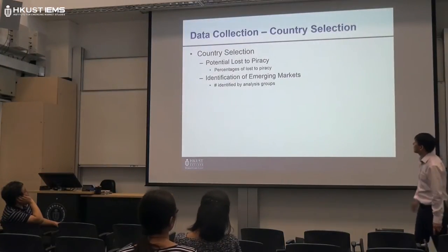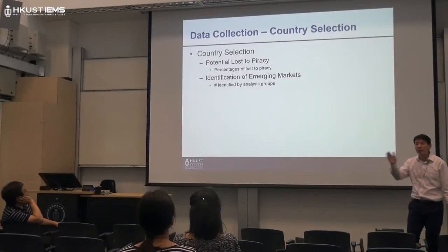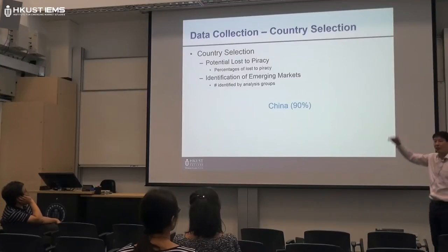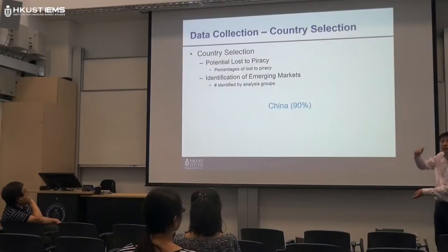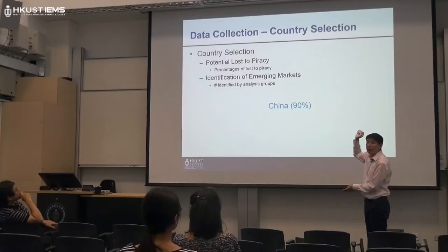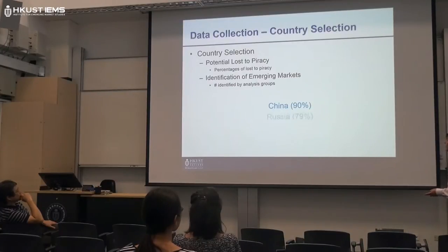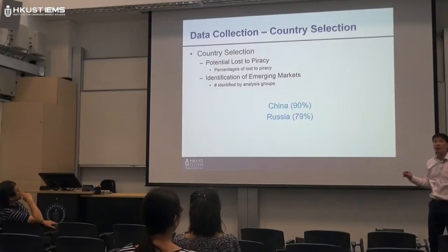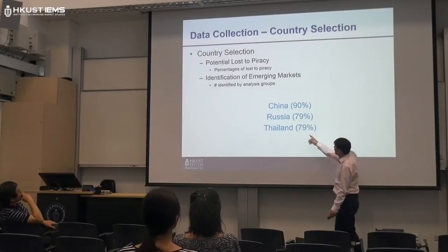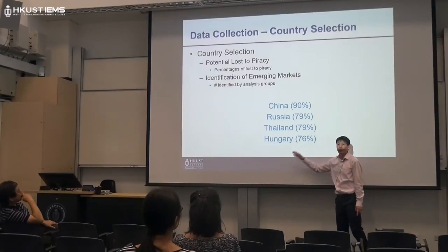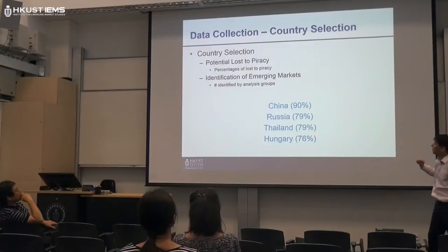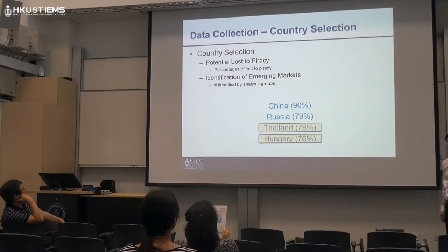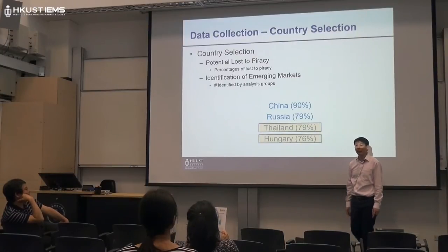For data collection, we first select which country to study. There are lots of emerging countries available. We look at the list — China at 90% piracy rate, Russia at 78%, Thailand at 79%, Hungary at 76%, and the list goes on. At the beginning I wanted to study four countries, but at the end I'm going to pick two.